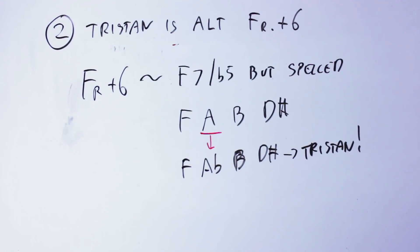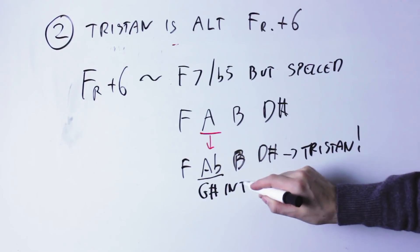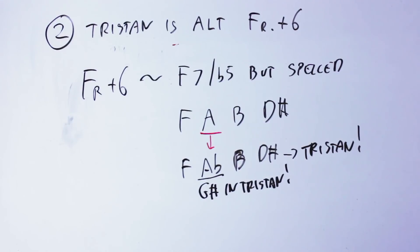So this is another interesting explanation of the origin of the Tristan chord, but there are still two problems with that. Problem number one is that if we alter that A note, then we should write it A flat, not G sharp, while Wagner very clearly writes G sharp.